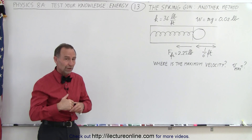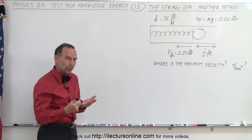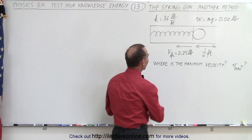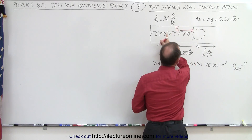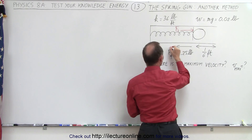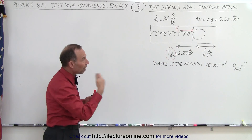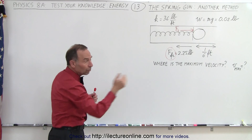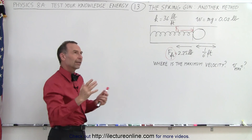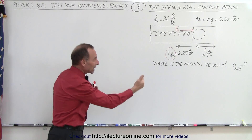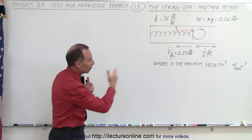In the previous video we figured out one way to do that, but there's actually another way. Remember there are two forces at play here. We have the force caused by the spring, F sub s, pushing to the right, and then we have a friction force pushing to the left. As long as the force of the spring is greater than the retarding friction force, there will be an acceleration of the ball out of the barrel.